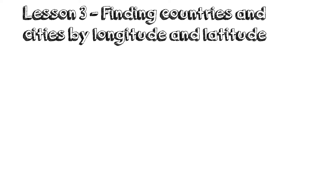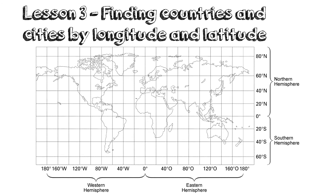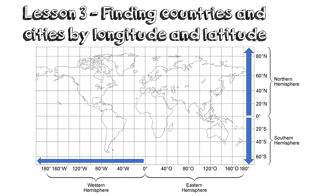This brings us to lesson 3: finding countries and cities by longitude and latitude. On a map, we can see how far north or south from the equator a place is by looking at the latitudes — it is usually marked at the sides of a map. Above the zero degrees is the Northern Hemisphere and below the zero degrees is the Southern Hemisphere. In the same way, we can see how far east or west a place is from the Greenwich Meridian by looking at the longitudes — it is usually marked at the top and bottom of a map.